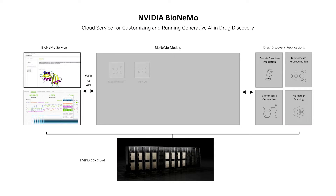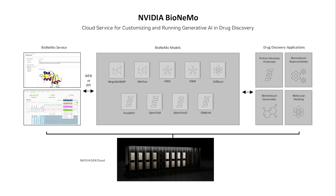These models include MegaMolbart and MoFlow for generative chemistry, ESM1 and ESM2 for protein-learned embeddings and property prediction, DiffDoc for pose prediction, ProtGPT2 for protein generation, and OpenFold, AlphaFold2, and ESMFold for 3D protein structure prediction.